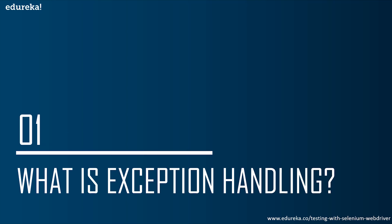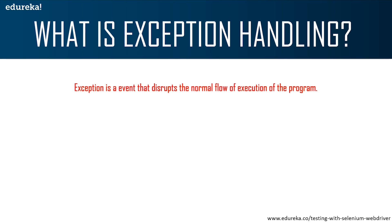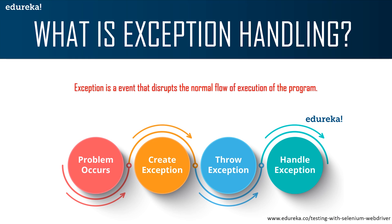First, let's understand what an exception is. An exception is an event which occurs during the execution of a program that disrupts the normal flow of the program's instructions. In simple words, any issue which makes your test case stop in the course of execution is known as an exception. When an exception occurs, the normal flow of the program halts and an exception object is created. The program then tries to find someone that can handle the raised exception.